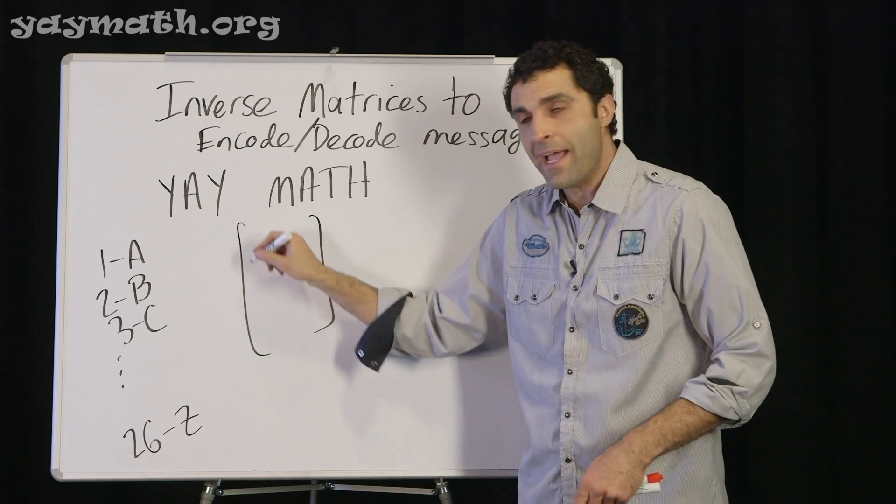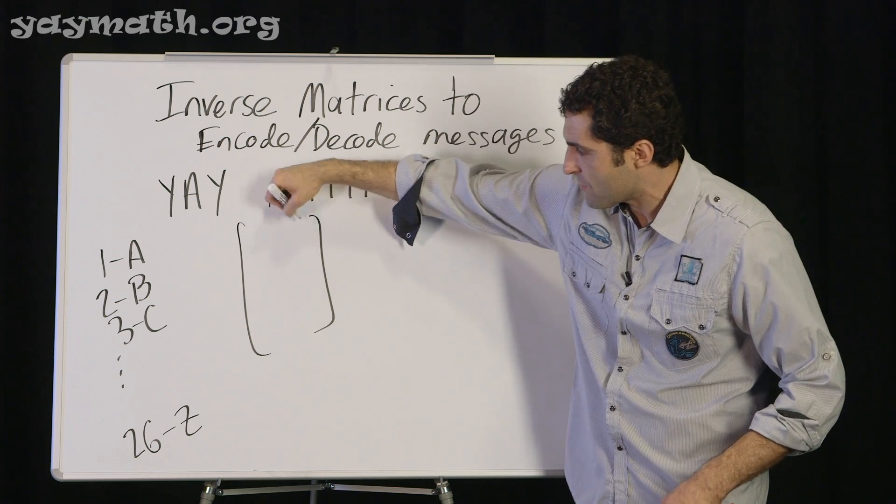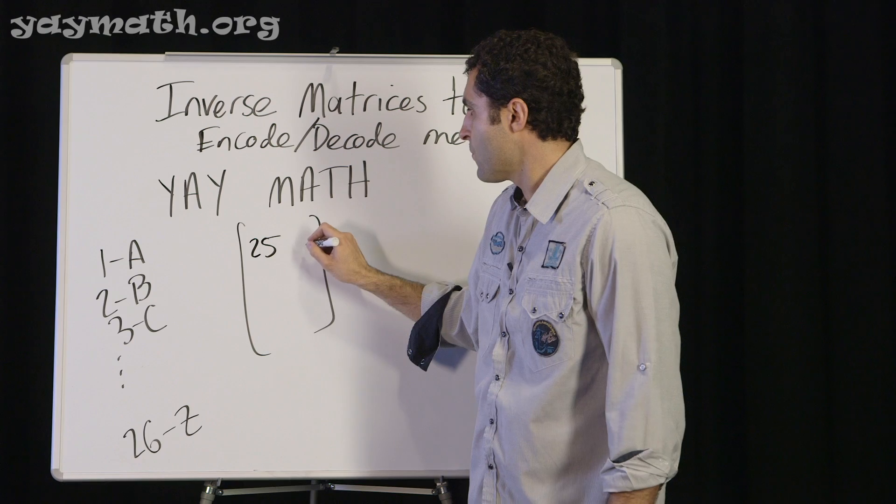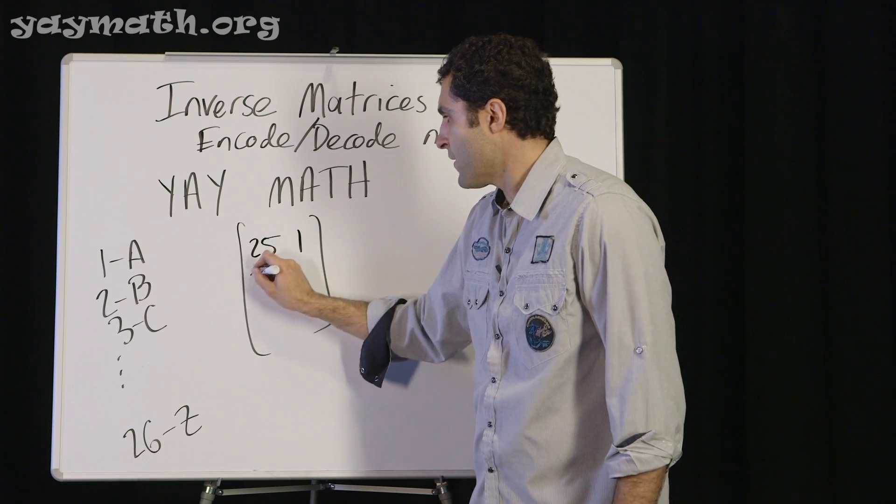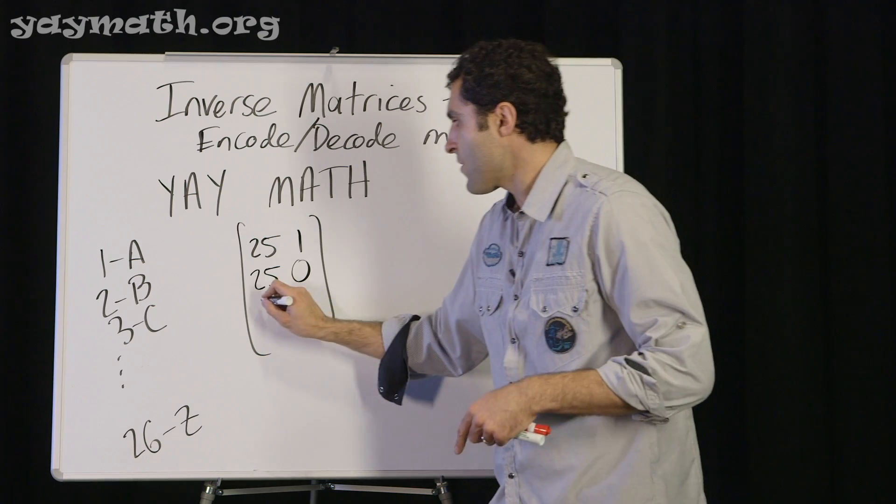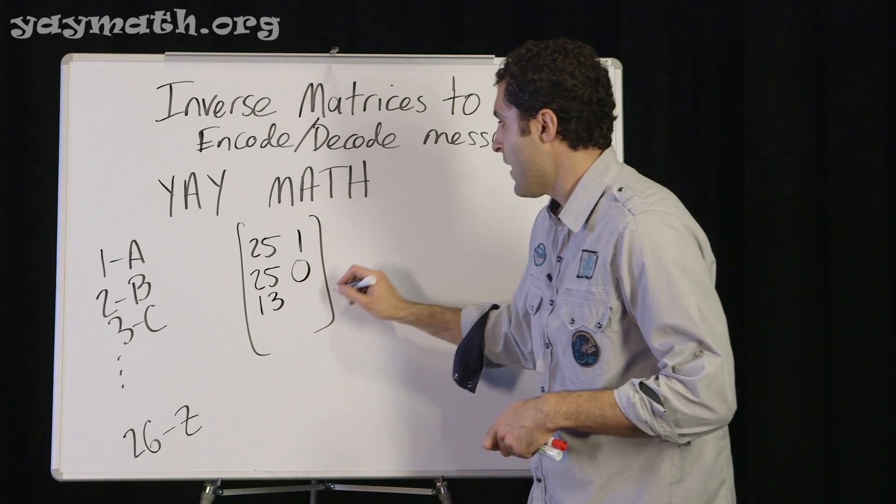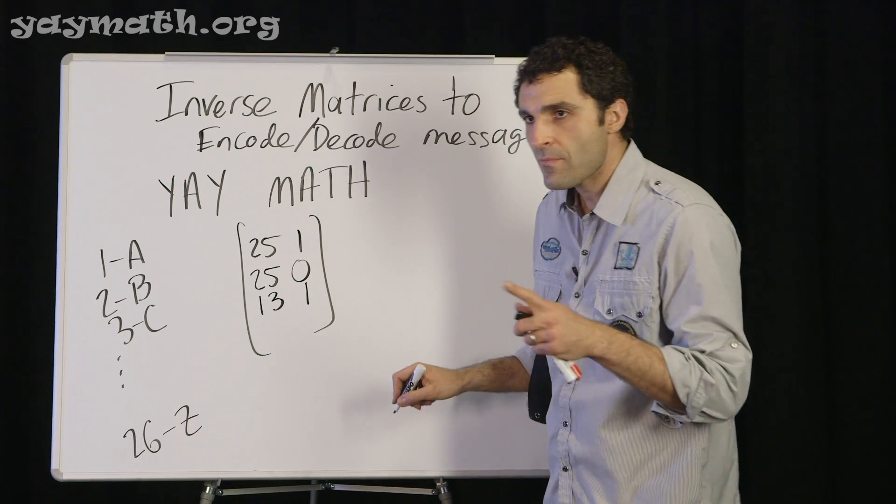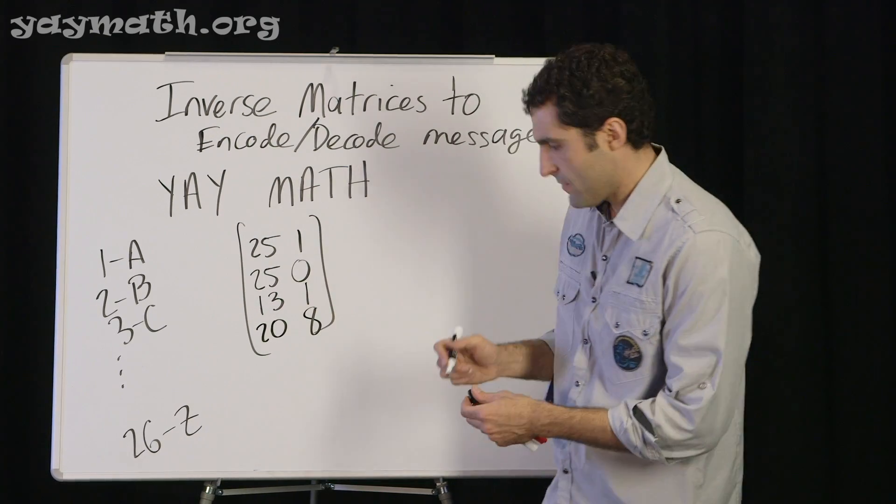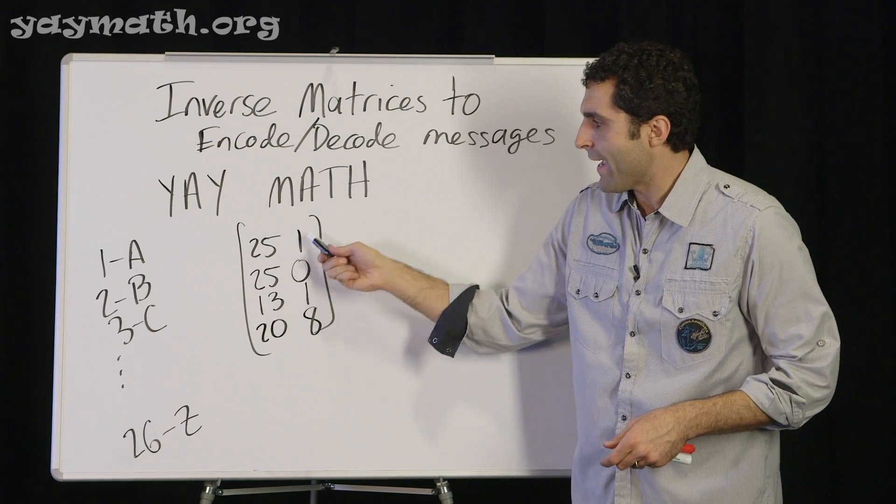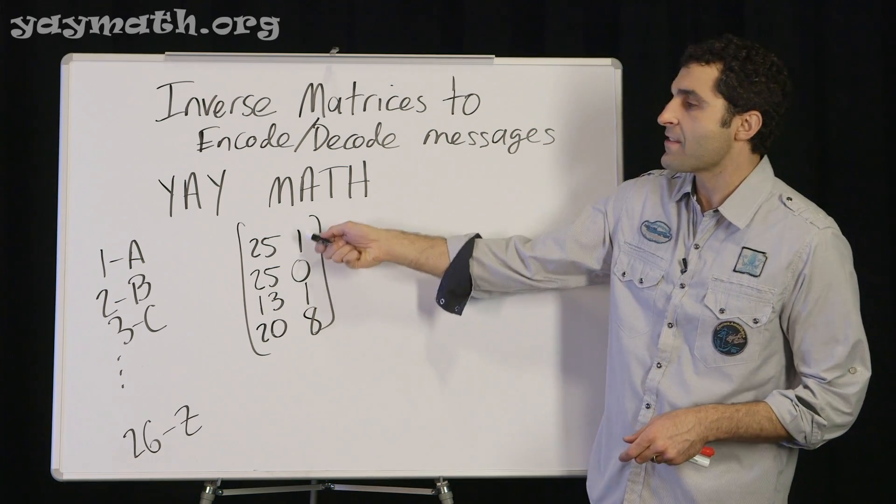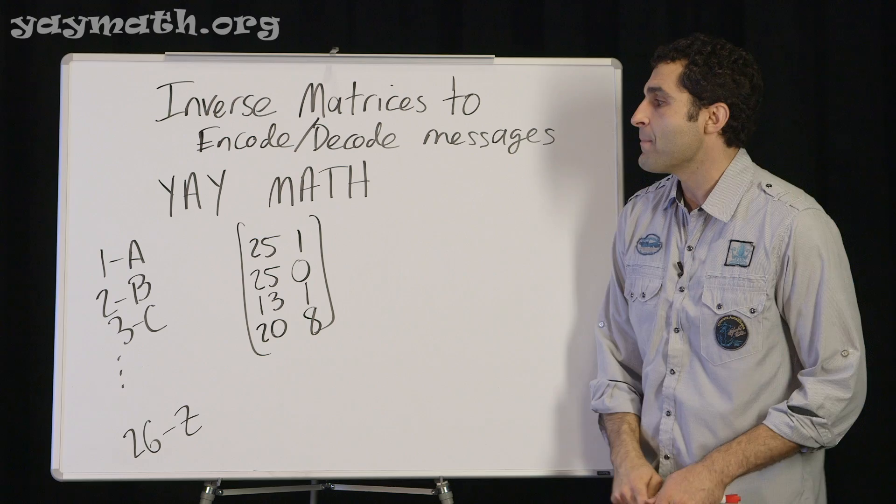We're going to go along by two columns at a time, just two columns. So this is 25, this is 1. This is 25, this is 0. M is 13. And then we're back to 1. Then you have 20 for T, and H is 8. So this is Y-A-Y space M-A-T-H. So now this is the numerical representation of the message yaymath.